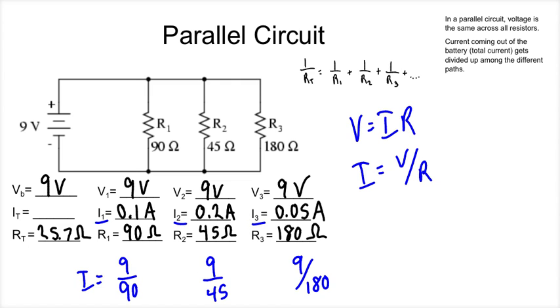We can also use this for I total. We can do I total equals 9 divided by the total resistance, 25.7. And we get a value of 0.35. So we've solved everything in the circuit.